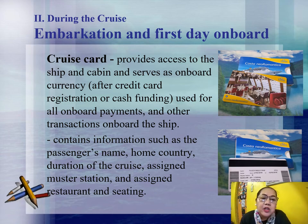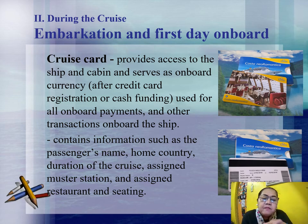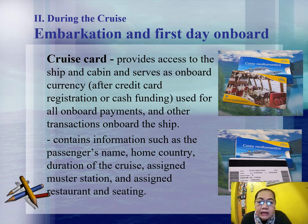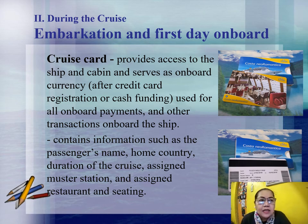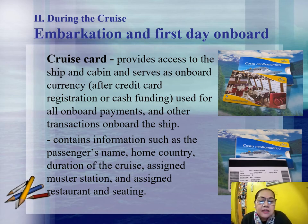The cruise card also contains important information: the passenger's name, home country, duration of the cruise, embarkation and disembarkation dates, and your assigned muster station. The muster station is where everyone gathers for the safety drill with life vests, assisted by the crew, before the ship sails. The card also shows your assigned restaurant and seating — whenever you book a specialty restaurant, you present your cruise card.